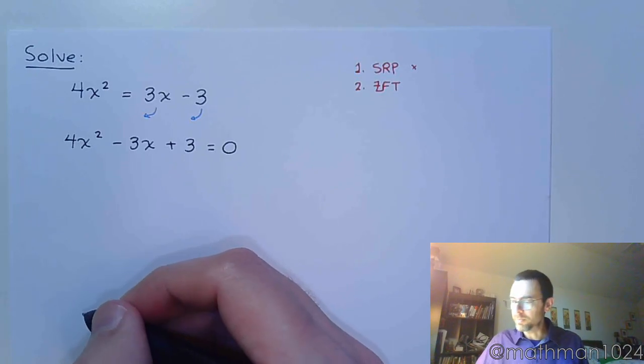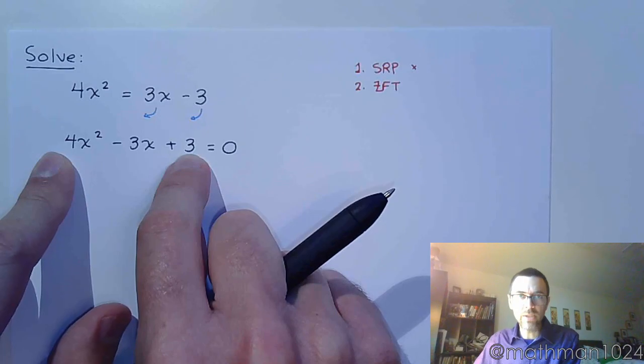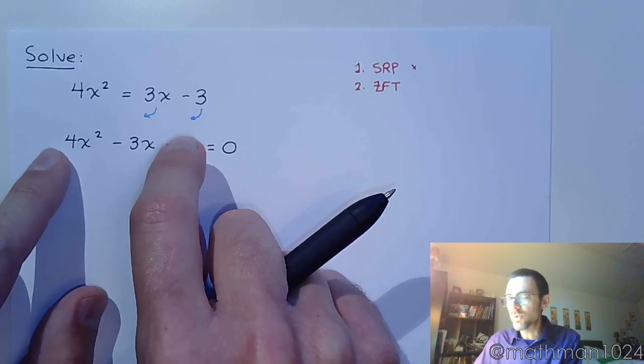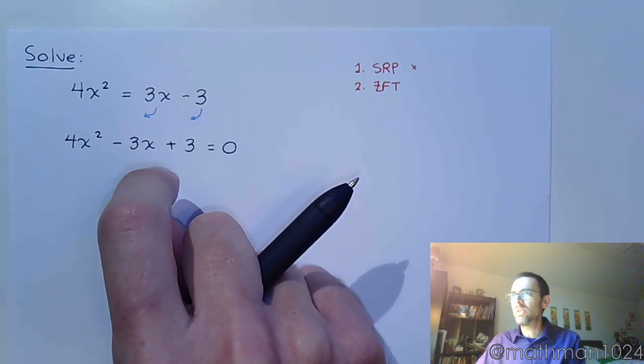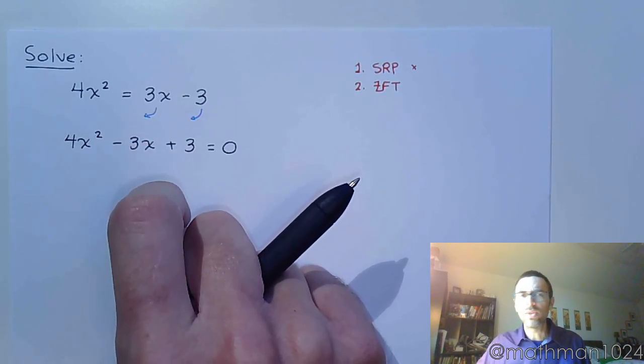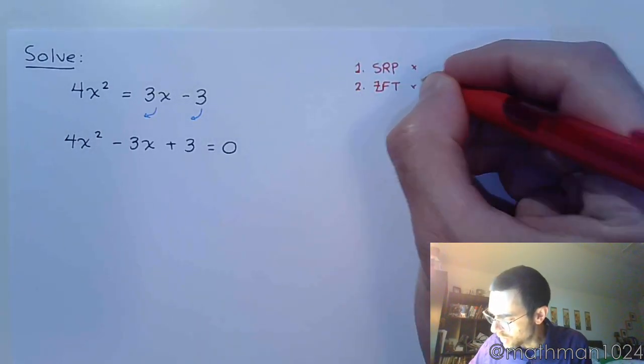If we're going to do the AC method, just to do our check, 4 times 3 is 12. And are there factors of 12 that add to 3? And there's not. No matter what you do, this guy's not going to factor. So sorry factoring, you are not useful here.